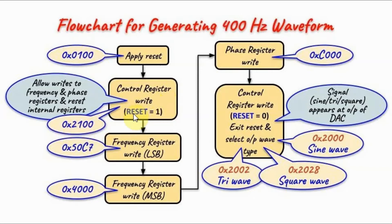Then we write into the control register a value that resets the internal registers to 0 and allows writes to frequency and phase shift registers. Then we write into the frequency register the least significant 14 bits of the frequency value, followed by the 14 most significant bits.